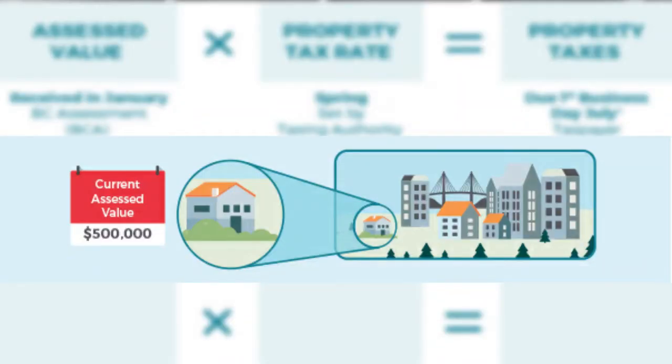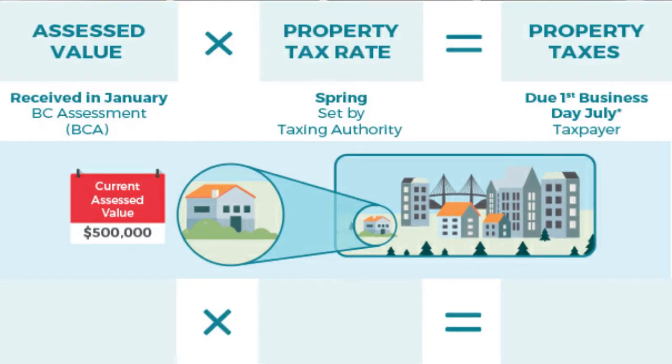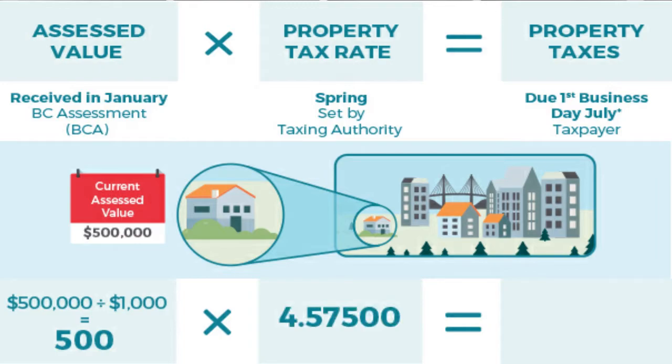In terms of property tax rate, this is set by your local taxing authority, so keep in mind that this number will vary based on year and location. For example, say your property is assessed at $500,000 as of July 1st of the previous year. Since the property tax rate applies to each thousand dollars of taxable assessed value, you must divide the assessed value of your property by $1,000. Next, multiply that number by the property tax rate for your property class to determine your property taxes. Property tax rates are independently determined by your taxing authority and are applied to each thousand dollars of your assessed value.